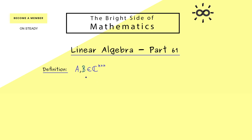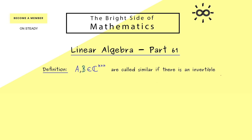What we need are two square matrices, so let's call them A and B. We can consider even the general case where we have complex numbers as entries. So in particular, this includes our real case. A and B are called similar to each other if we can transform the one into the other one. More precisely, this is the case if we find an invertible matrix S such that S inverse BS is equal to A.